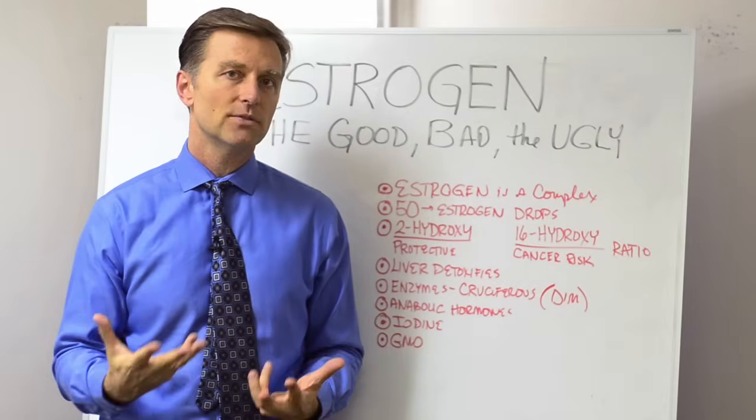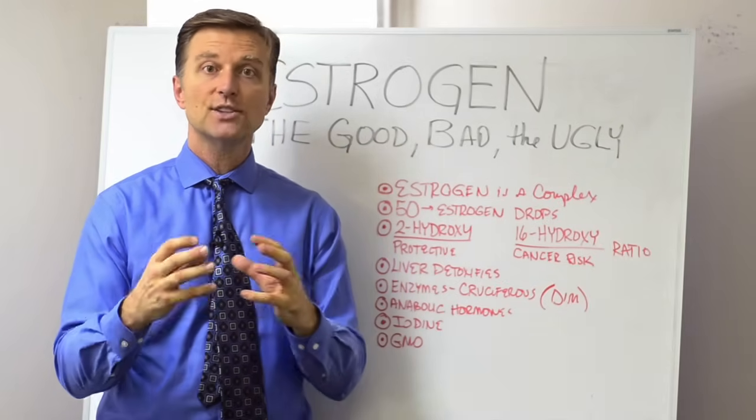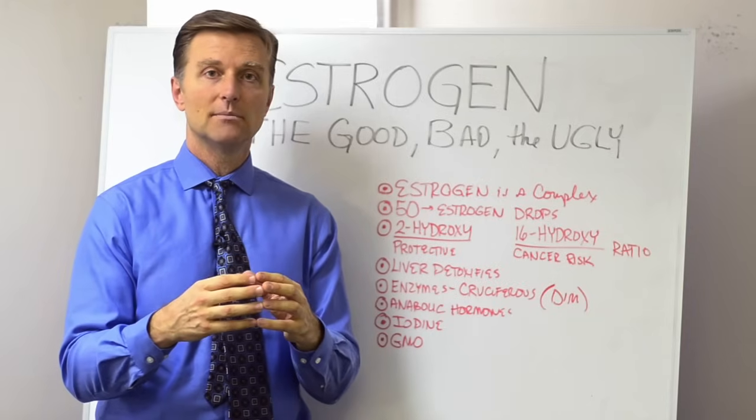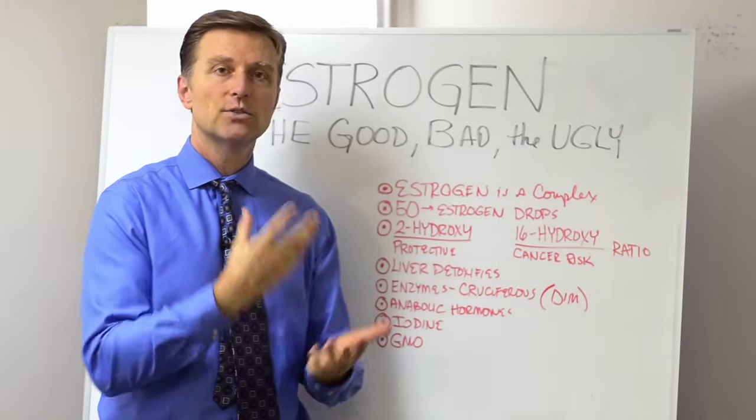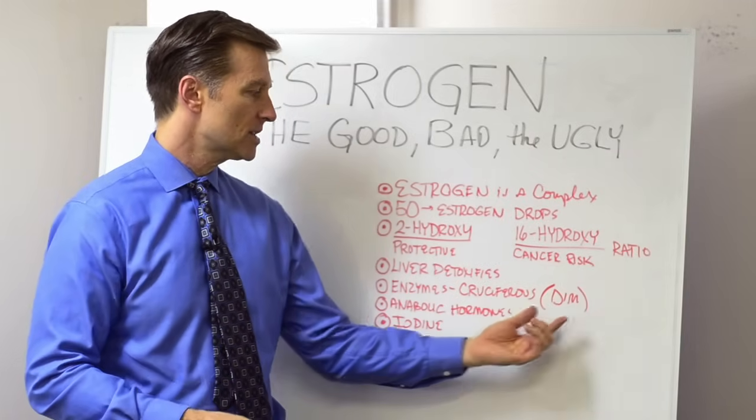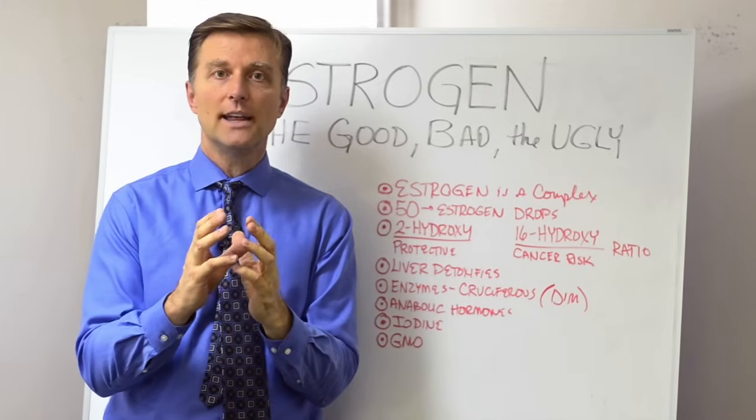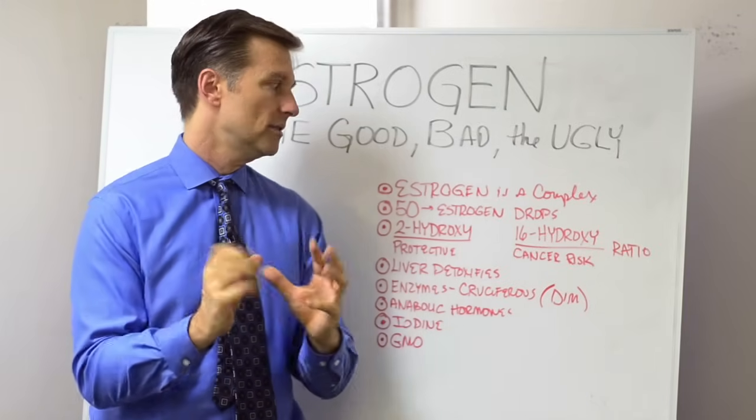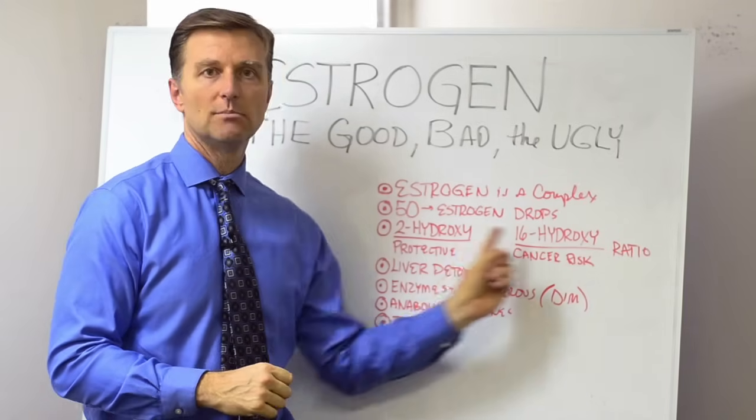I want to talk about cruciferous, and I want to talk about a concentrated natural chemical in cruciferous called DIM. It's a concentrated phytochemical that's very supportive in getting these ratios back to normal.